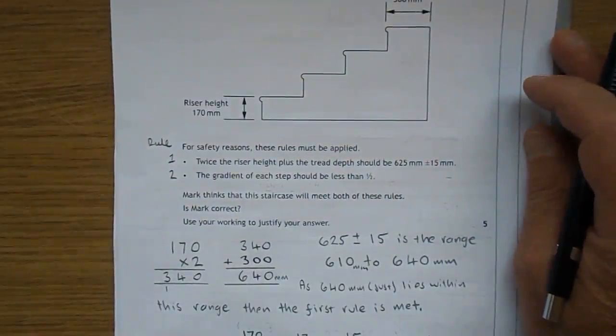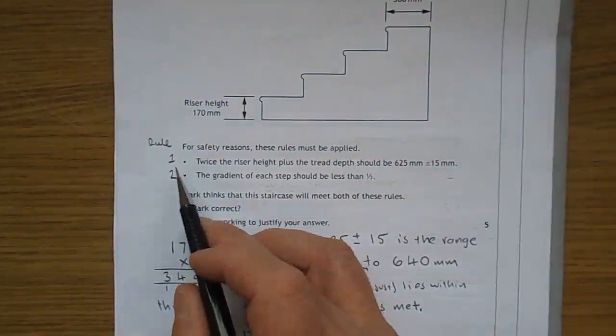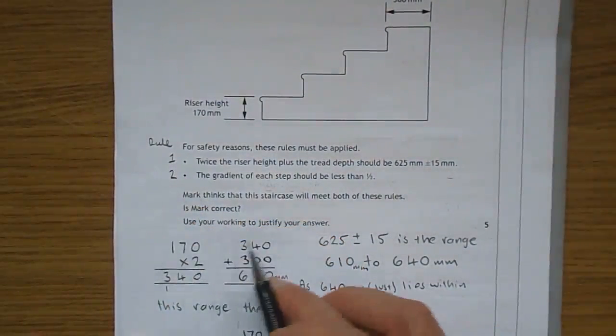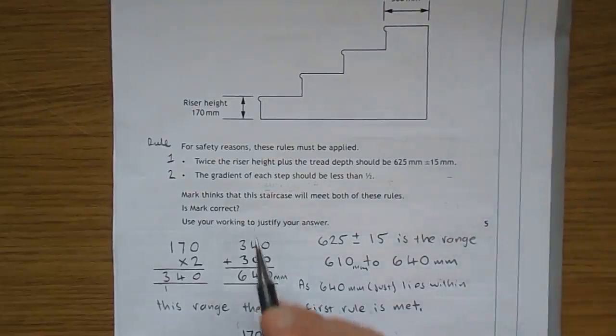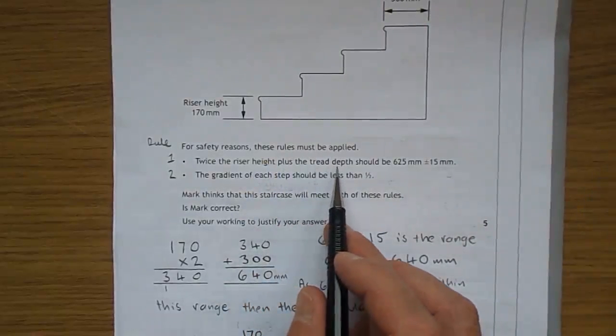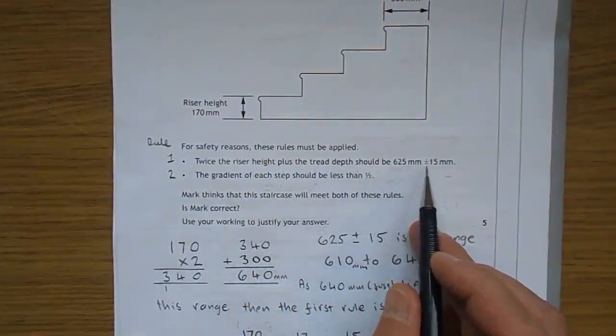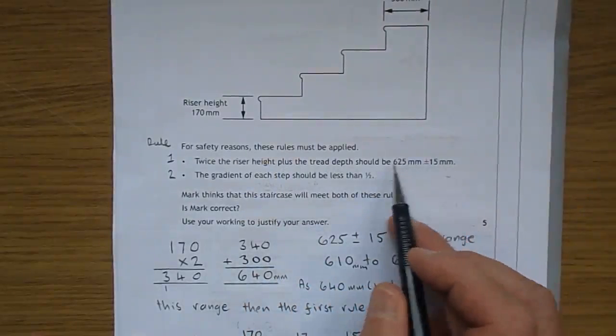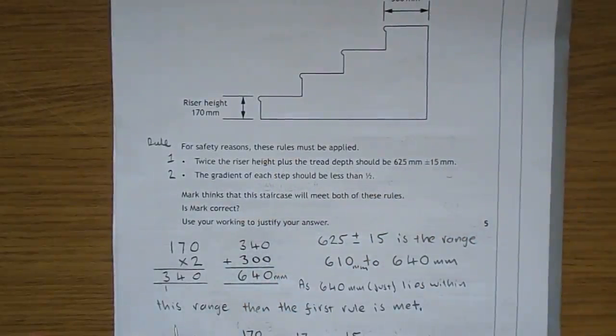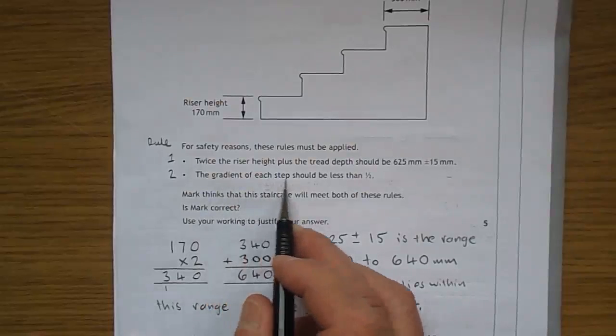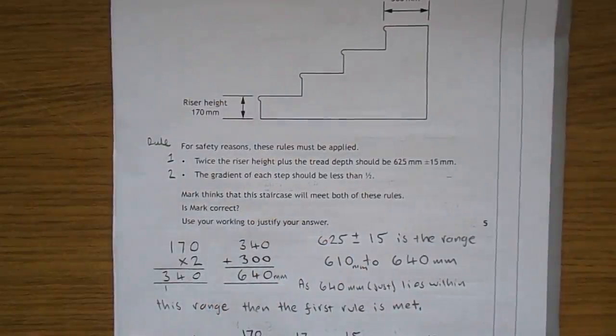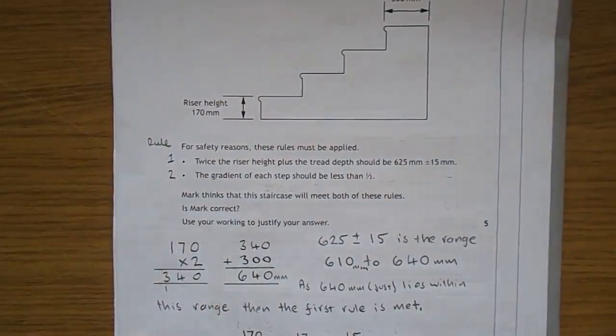For safety reasons, these rules must be applied. I've just called them rule 1 and 2 so that I can relate to them later on. Twice the riser height plus the tread depth should be 625 plus or minus 15. So there's a range of acceptable values. The gradient, steepness of each step, should be less than a half.